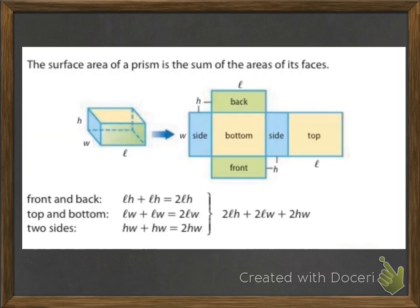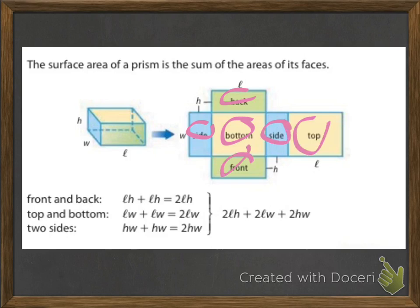The surface area of a prism is the sum of the areas of its faces. So you would find the area of the back, the side, the bottom, the front, the other side, and the top, and you would add them all together.